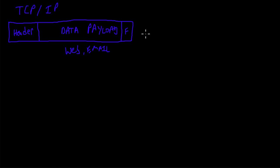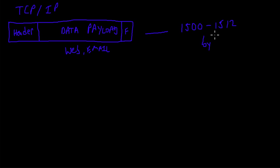The total size of a packet will be approximately 1500 to 1512 bytes. It kind of depends on what routers it's going through, how it's being fragmented, and a lot of other factors.